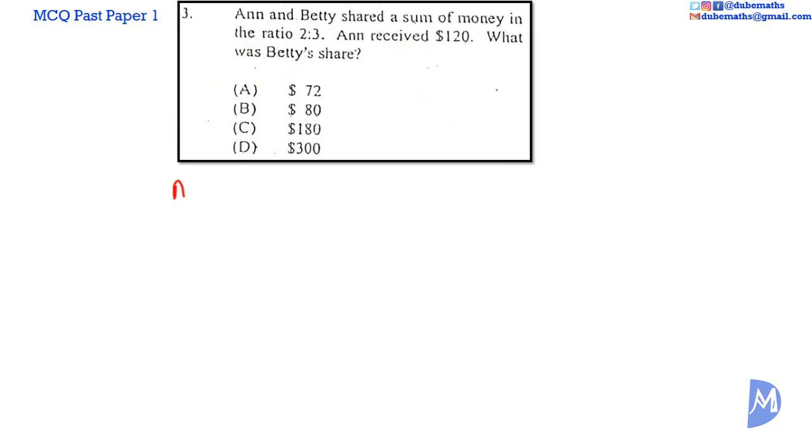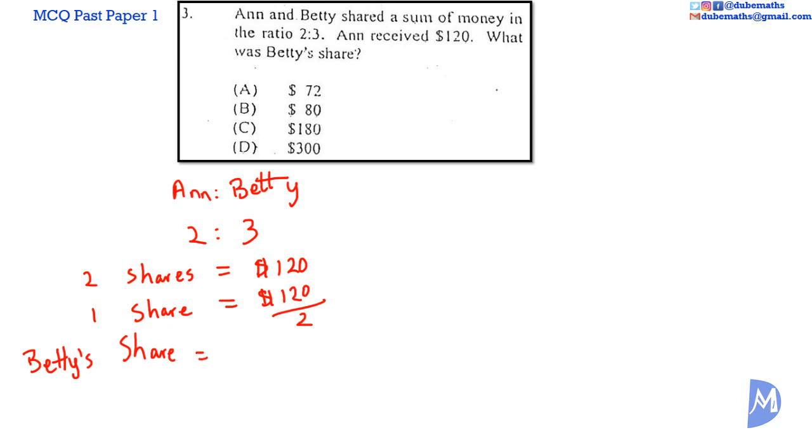The ratio of Ann to Betty is 2 to 3. Two shares is equal to $120. Using the unitary method, we find for one share. One share is equal to $120 divided by 2. We have to find Betty's share, which is equal to 3 shares.